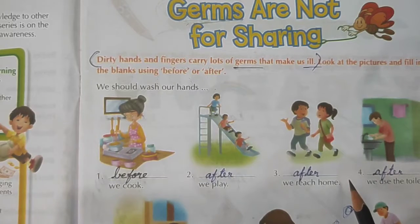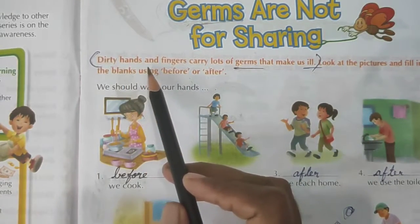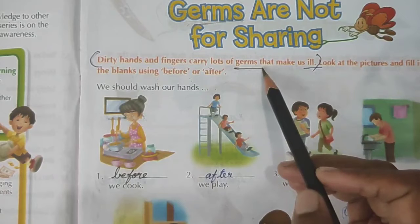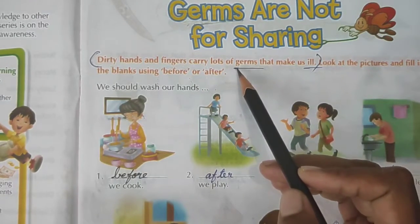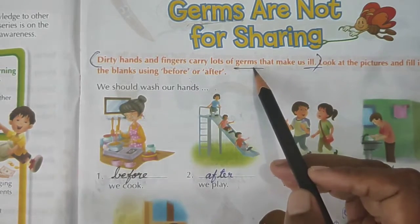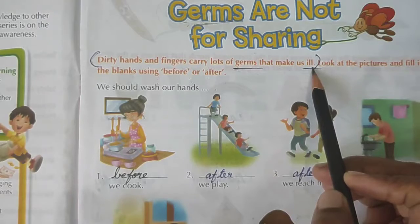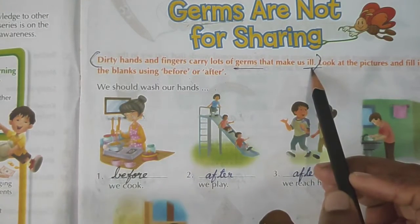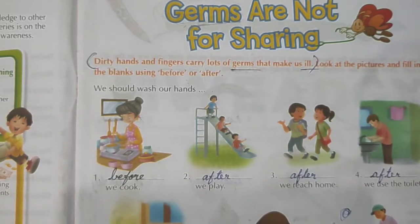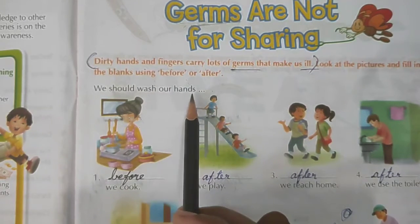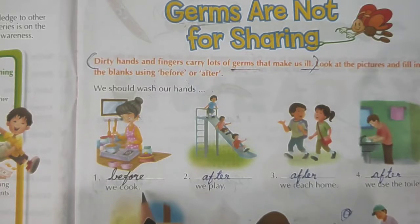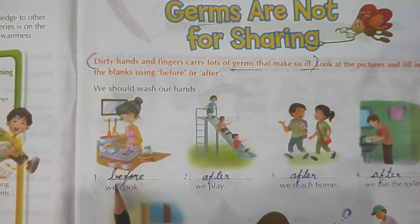From this exercise we learnt when we should wash our hands — before or after. Dirty hands and fingers carry lots of germs. Spell the word: G-E-R-M-S — germs. That makes us ill. Spell the word ill: I-L-L. We should wash our hands before we cook. Spell the word before: B-E-F-O-R-E.